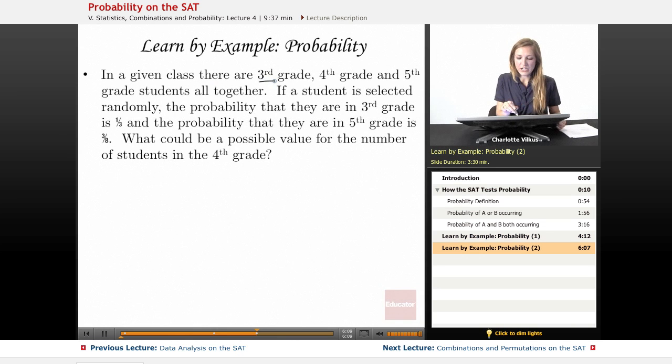In a given class there are 3rd grade, 4th grade, and 5th grade students, and they're all together. If a student is selected randomly, the probability that they are in 3rd grade is 1/3, and the probability that they are in 5th grade is 3/8. What could be a possible value for the number of students in the 4th grade?